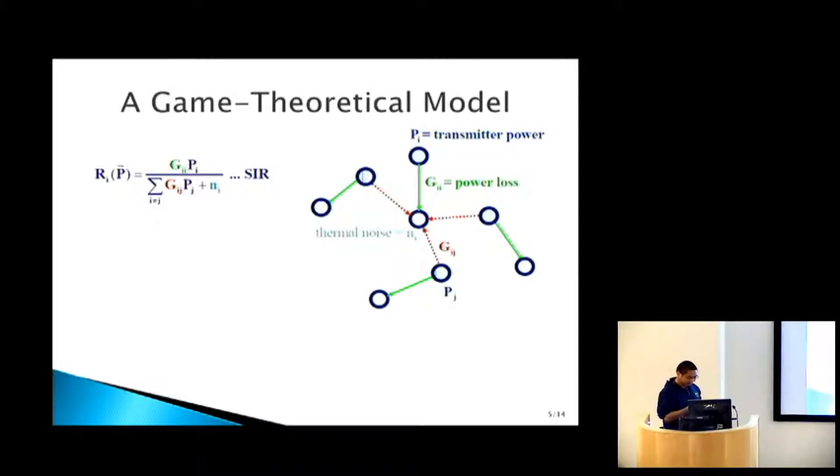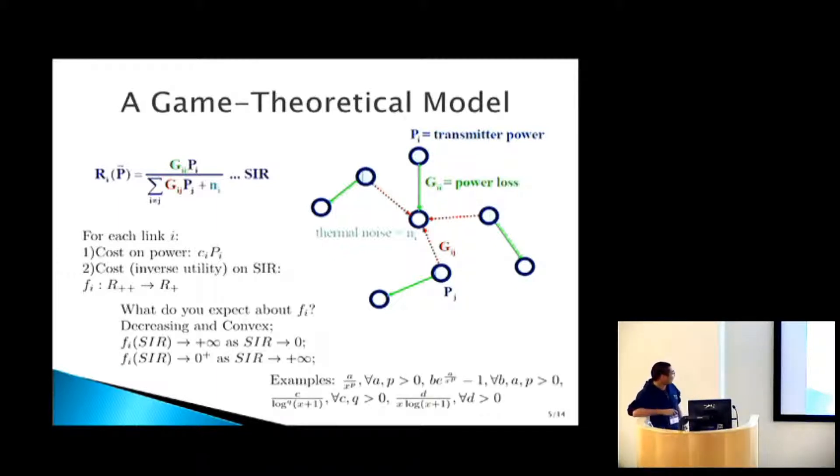This gets us to a game theoretical model that could potentially address these issues. We'll impose a utility structure on all the links. We'll take a simple model where the cost has two components. The first one is the cost associated with power. The second one is the cost associated with signal-to-interference ratio, which can be interpreted as inverse utility. We impose natural structural assumptions here. The cost is convex and decreasing. If you're not transmitting anything, you should be very unhappy. If you're transmitting a lot, then you should be very happy.